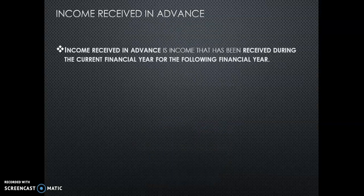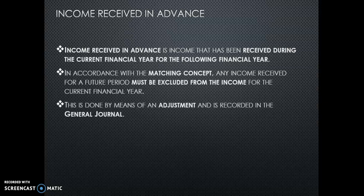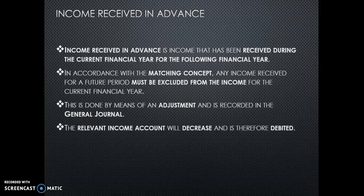Income received in advance is when you receive income in the current financial year that is only yours in the next financial year. So if you apply the matching concept, which is the GAAP, any income received for a future period must be excluded from the current financial period, because only income and expenses for the current financial period must be put together. So you do an adjustment in the general journal — the relevant income account will decrease. Income initially increases owner's equity on the credit side, but if the income is decreasing, it must be debited.